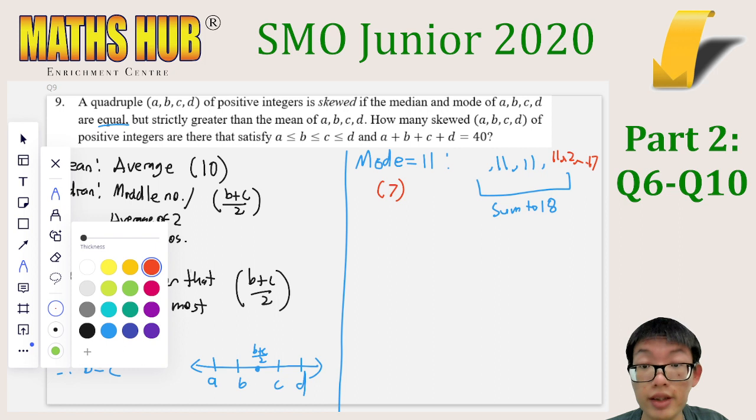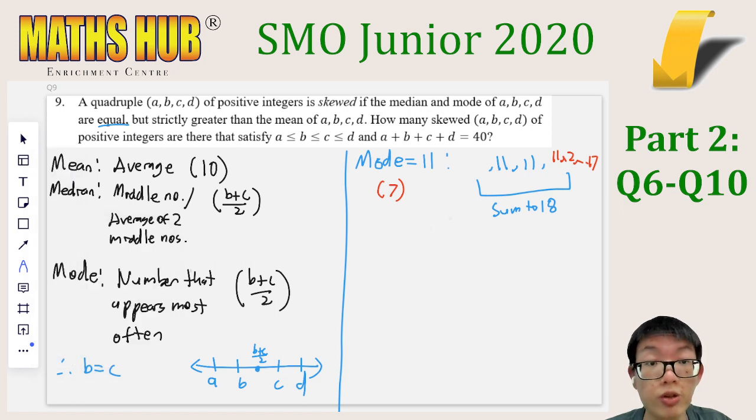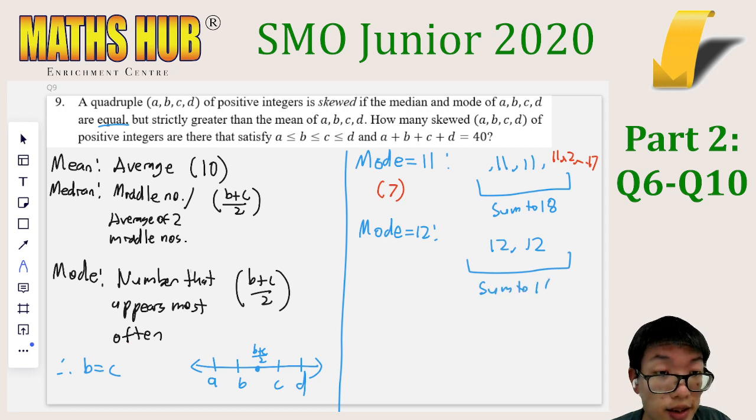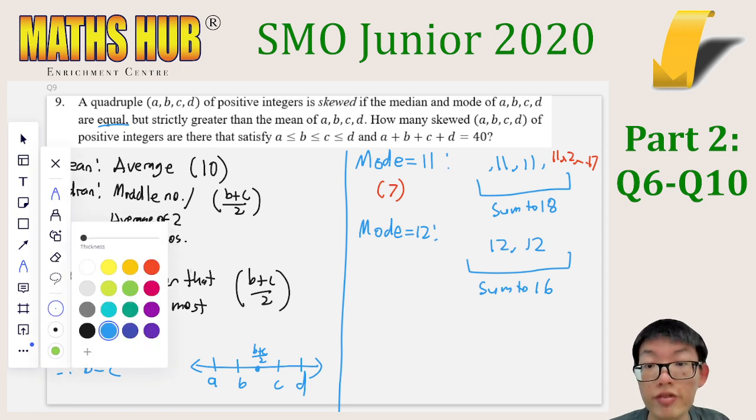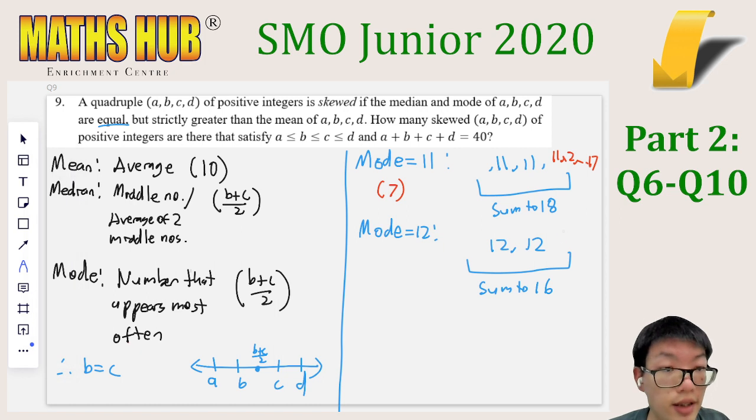Let's look again at the next case for the mode being equal to 12. If the mode is 12, then the two other numbers this time would sum to 16. The first number again is at least 1, so that means that the number behind is at most 15, but at least 12. So your options range from 12 to 15, and from 12 to 15 is 4 possibilities.